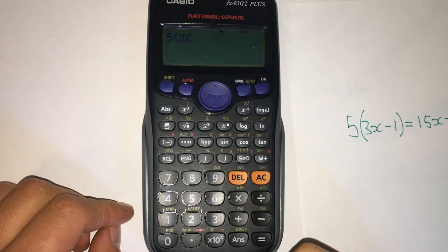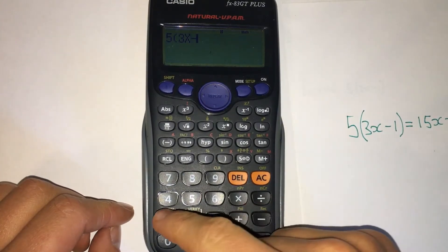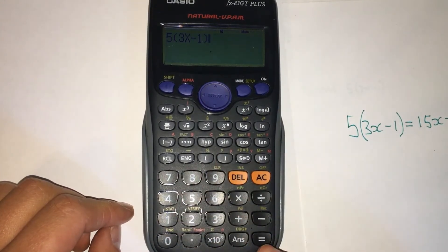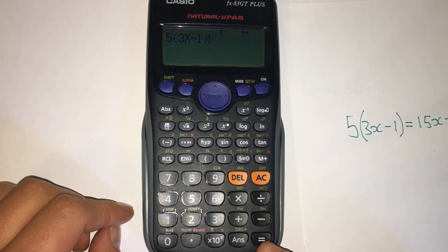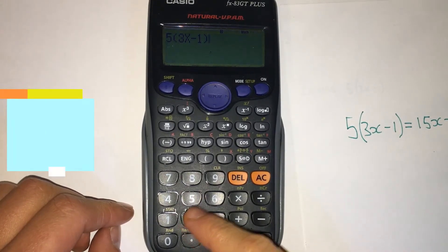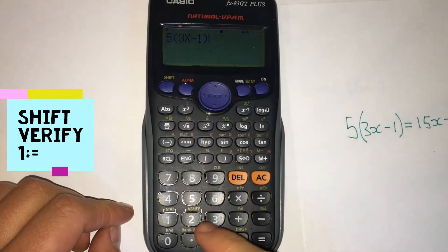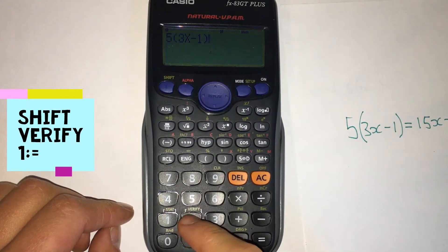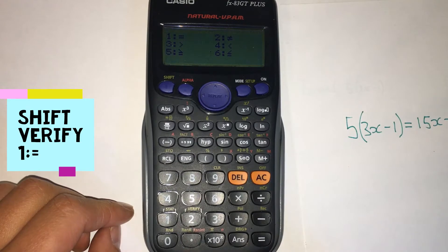Now we can't use this equals. We need to use the equals that's in verify mode. So we press shift, and then we've got number two here written in yellow that says verify.